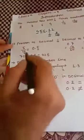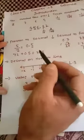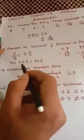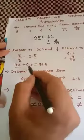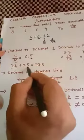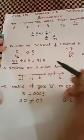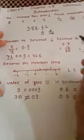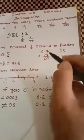So the answer will be 0.5. Now if we are adding a whole number with a decimal number — for example, 72 plus 0.5 — the whole number remains as it is and the decimal part is added, so it becomes 72.5.